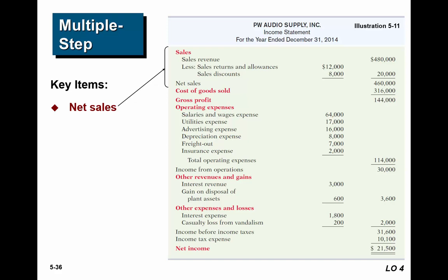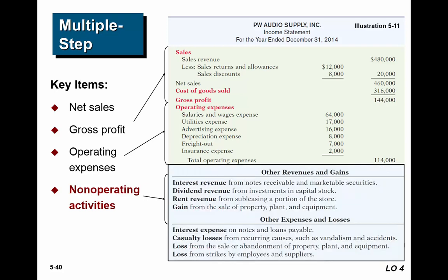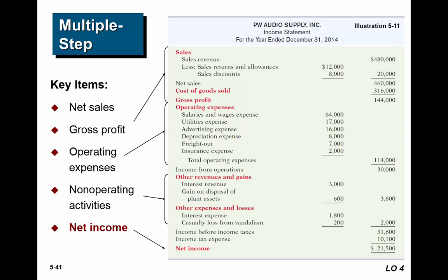Net sales is sales minus any sales returns and allowances and discounts. Gross profit is net sales minus cost of goods sold. Operating expenses are the day-to-day costs of operating the business. Non-operating activities are expenses or revenues not normal to business operations — for example, a gain on disposal of plant assets. If they sold off some equipment and made a gain, that's revenue, but it's not something they'll make every month — it's special for this period.